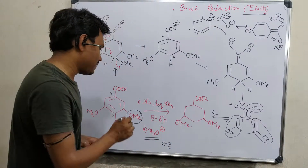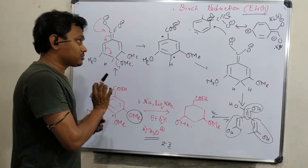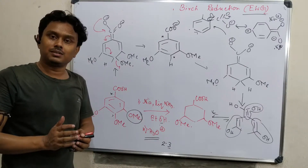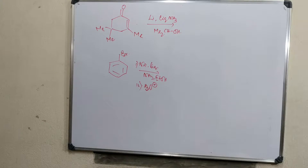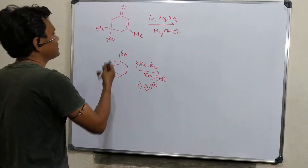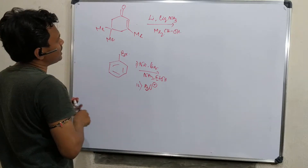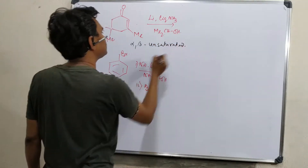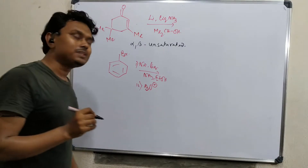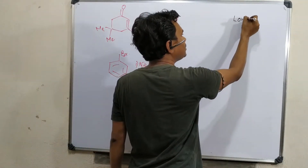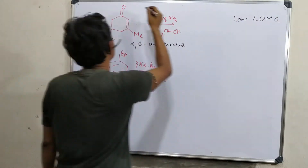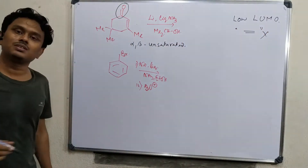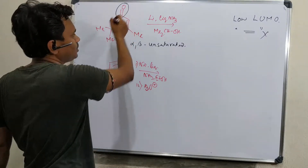If you are confused, try to see this explanation again — I think it will be easier to understand. Let us discuss two other examples involving an alpha-beta unsaturated carbonyl compound. We know that this alpha-beta unsaturated carbonyl compound has a low-lying LUMO because of conjugation with the carbonyl. A simple double bond cannot undergo Birch reduction, but due to conjugation, it is capable of undergoing Birch reduction because of the electron withdrawing group effect.